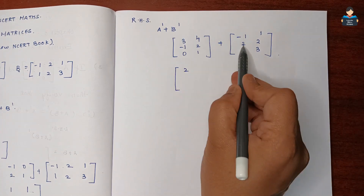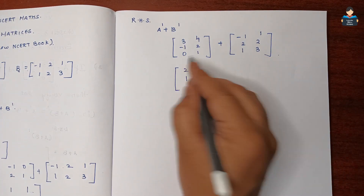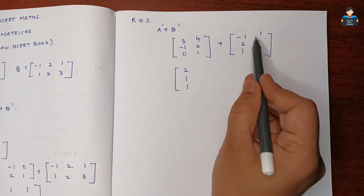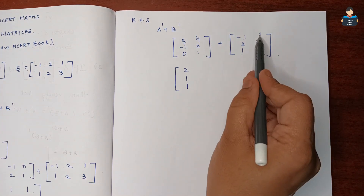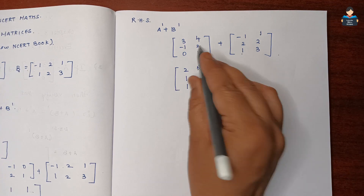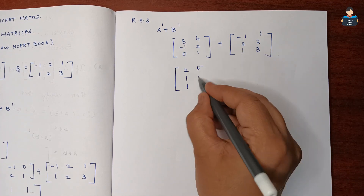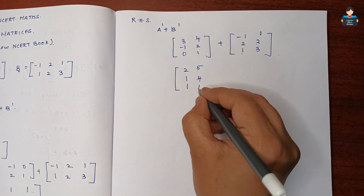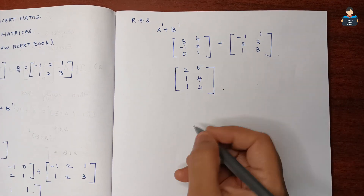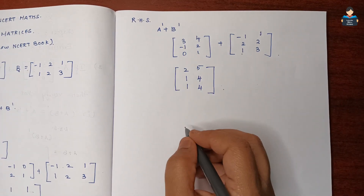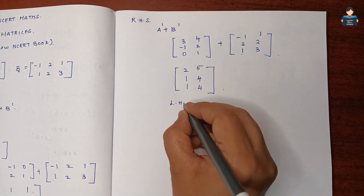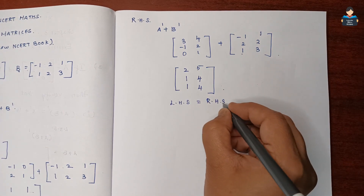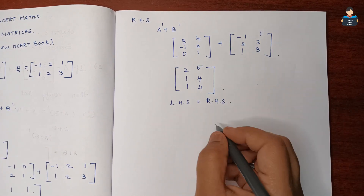Adding A transpose plus B transpose: 0+1=1, 4+1=5, 2+2=4, 1+3=4. So LHS equals RHS. Hence verified.